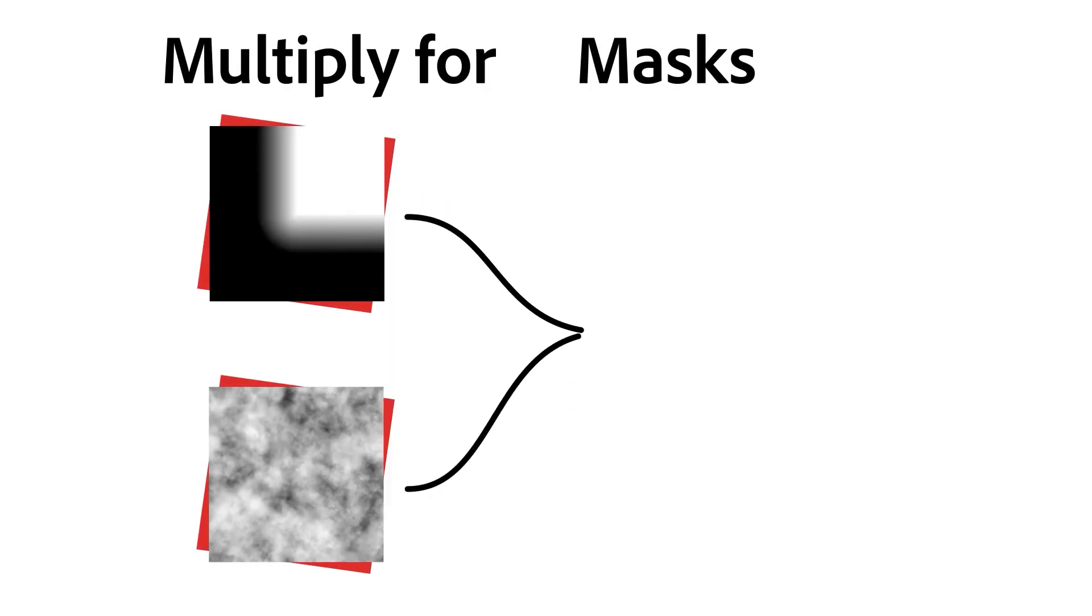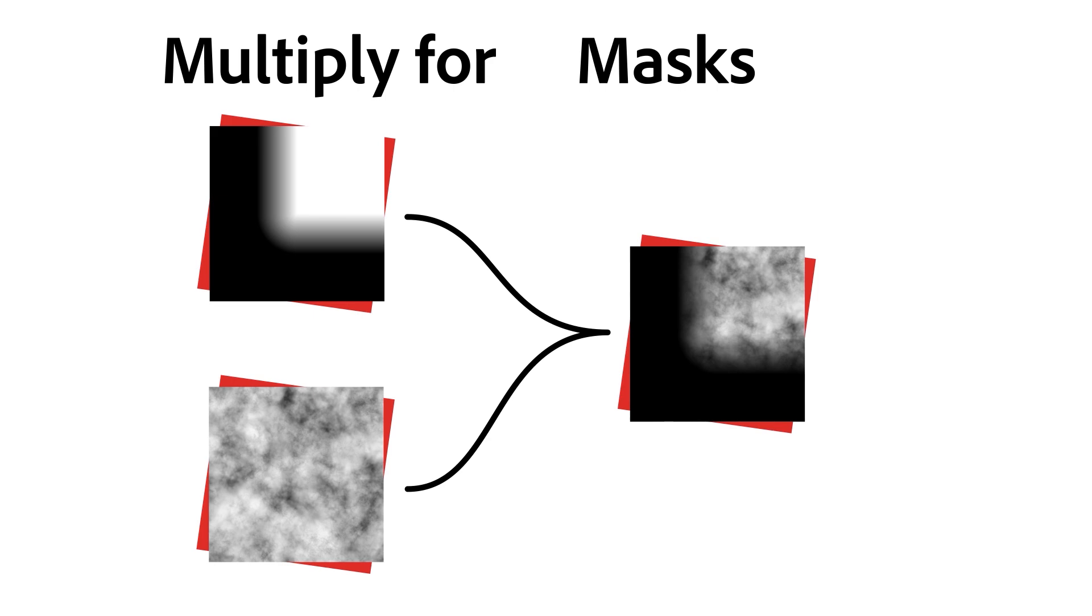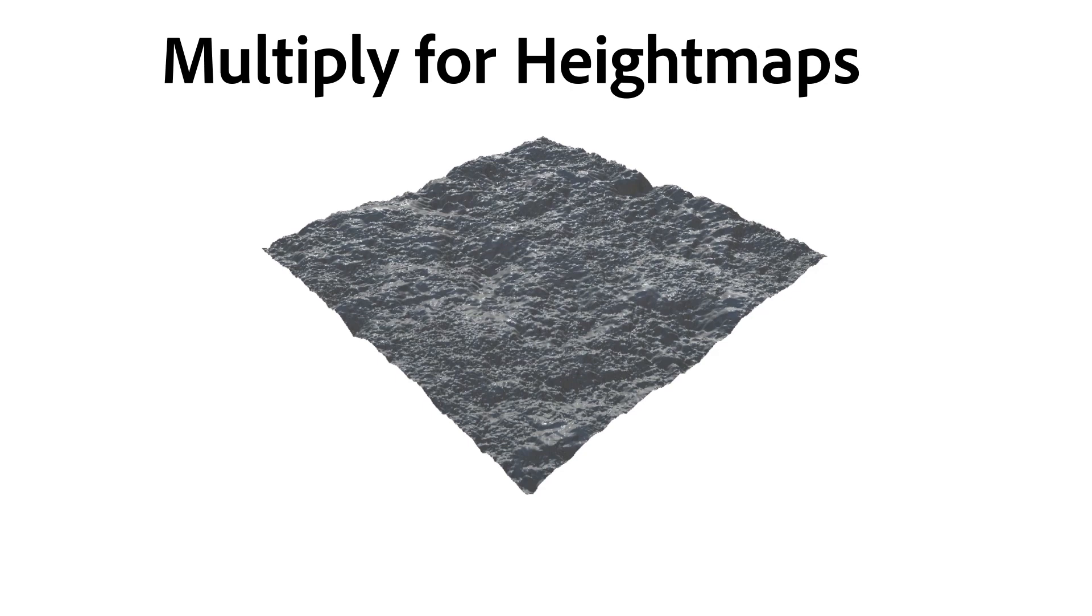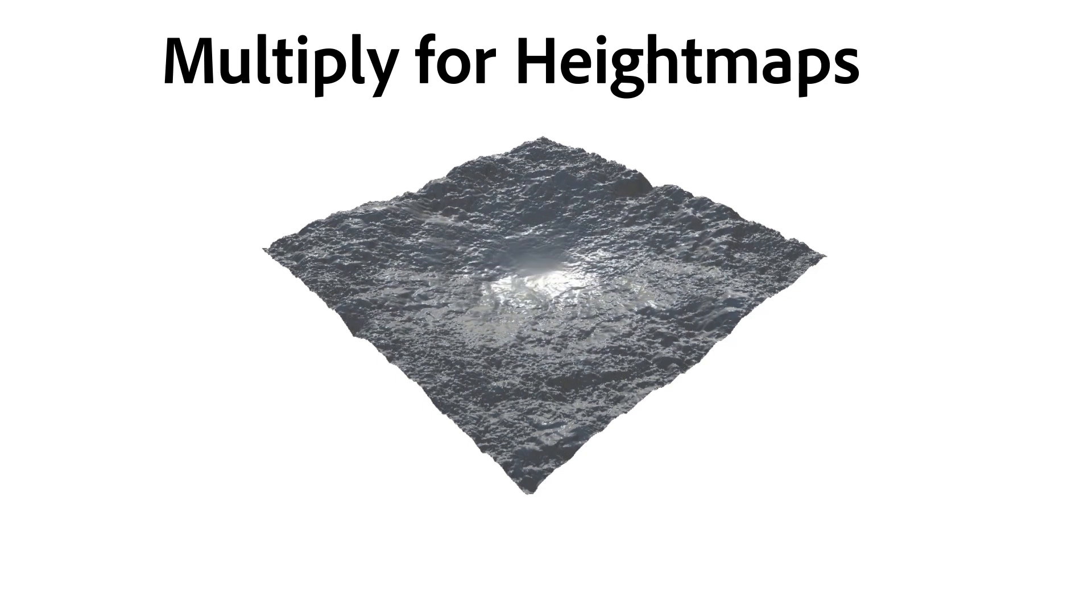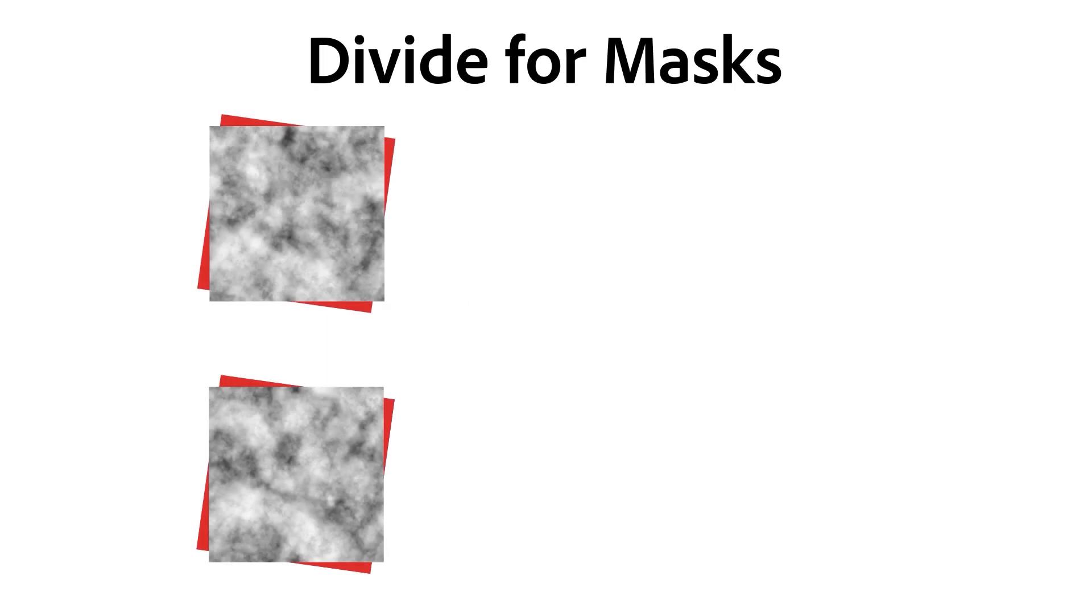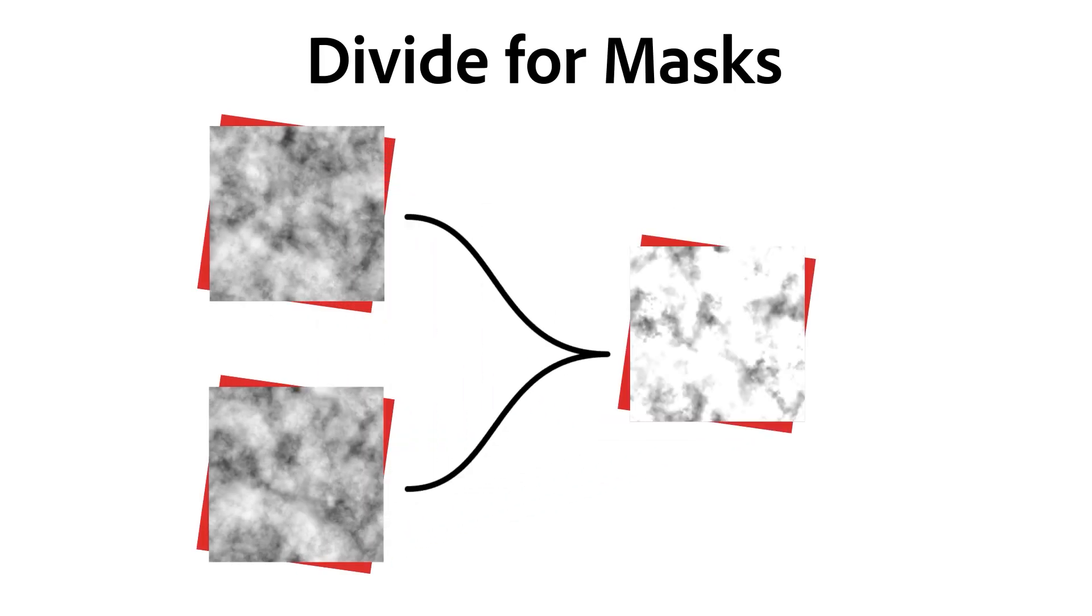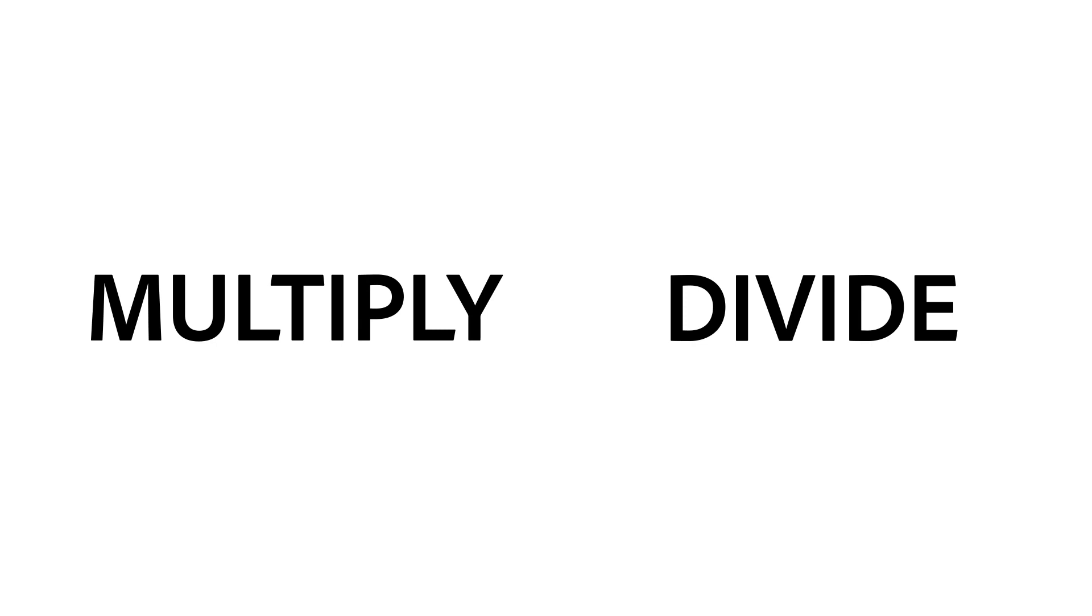So to recap, multiply and divide: multiply combines two masks keeping the white only if both components are white. Multiply pushes downward on your height maps, gradually fading detail out from the bottom component. Divide can highlight differences between two similar components in the mask. And that's it for these two modes.